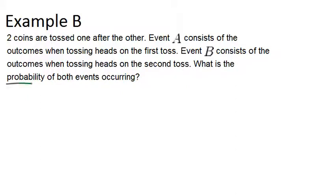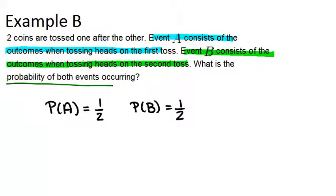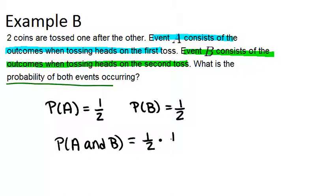We're trying to figure out the probability of both events occurring. Event A is heads on the first toss and event B is heads on the second toss. The probability of event A — heads on the first toss — is 1/2, because the probability of getting heads is always 1/2. Similarly, the probability of event B — getting heads on the second toss — is also 1/2, independent of whatever you got on the first toss. So the probability of both A and B happening is 1/2 times 1/2, which gives us 1/4.